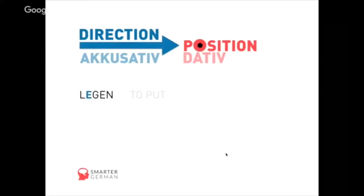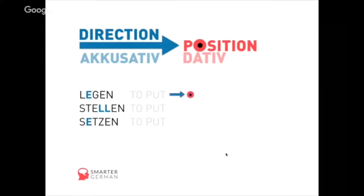There's a group of verbs I call twin verbs because they're very alike, which help you identify which case to use. There's legen, meaning 'to put' (lay flat); stellen, also meaning 'to put' (stand upright); and setzen, meaning 'to put' (seat). Legen is the action that results in the position liegen, meaning 'to lie.' Stellen leads to the position stehen, meaning 'to stand.'